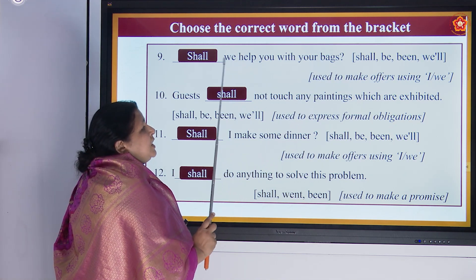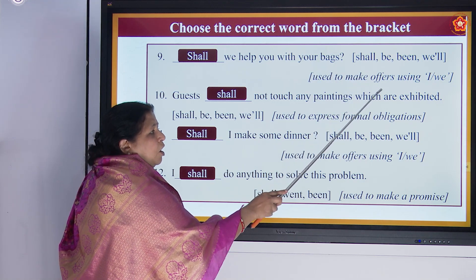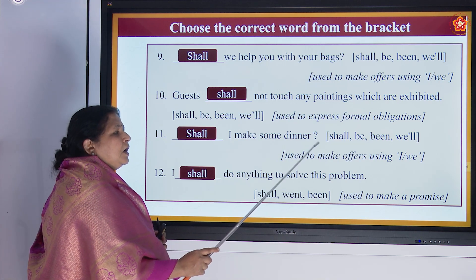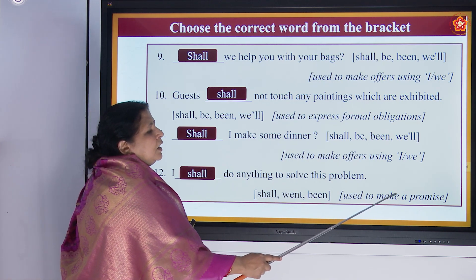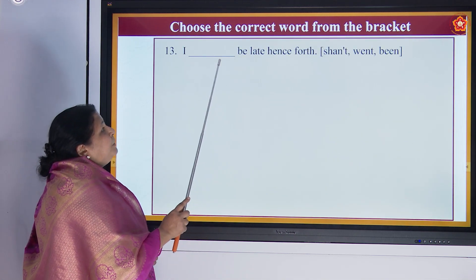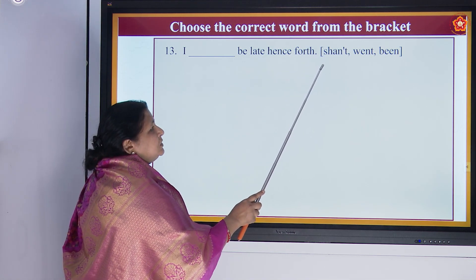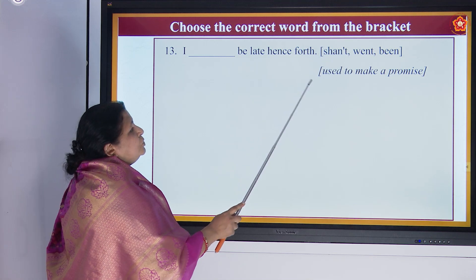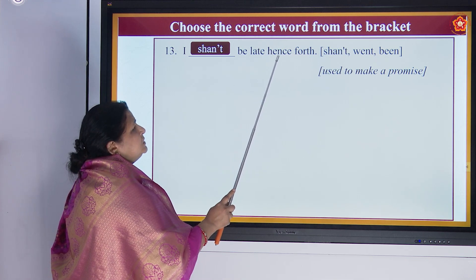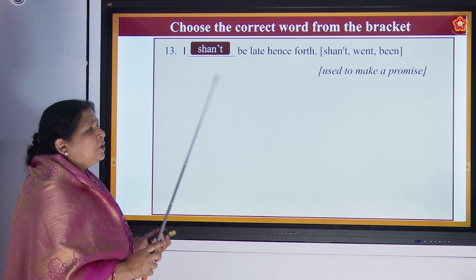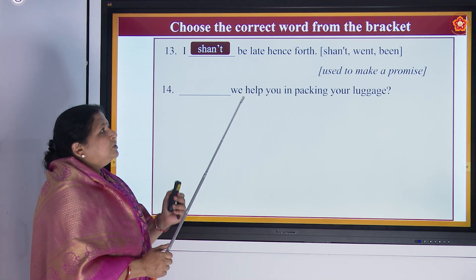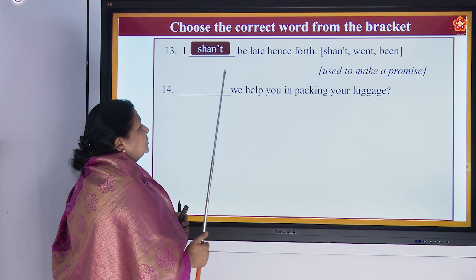We have seen when 'shall' is used: for making an offer, for expressing formal obligations, and for making a promise. Next: 'I dash be late henceforth' — shan't, went, or will? Used to make a promise. 'I shan't be late henceforth' means you will never be late from now on — you are promising somebody. They have been waiting for hours and you say: 'I shan't be late henceforth.'